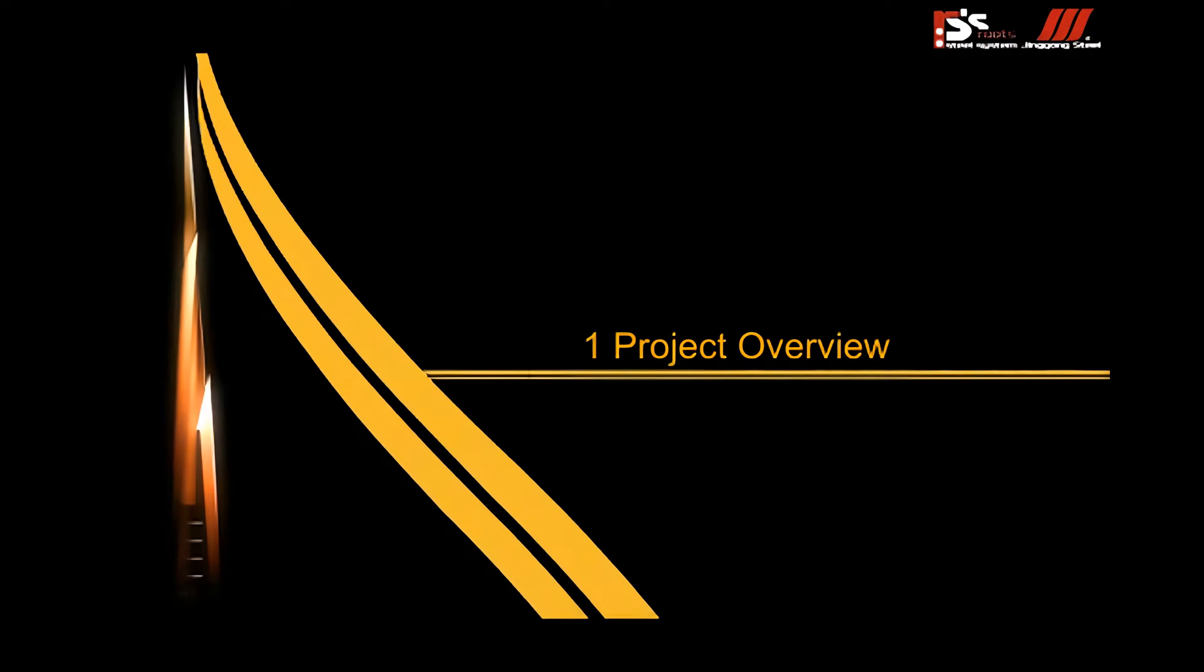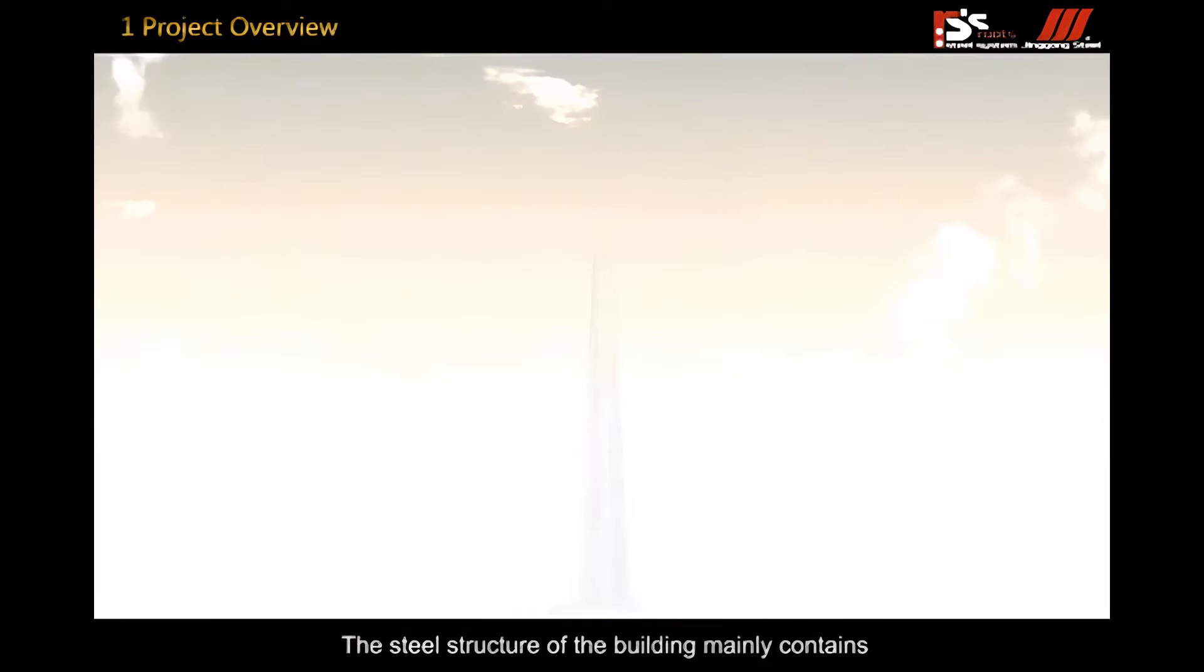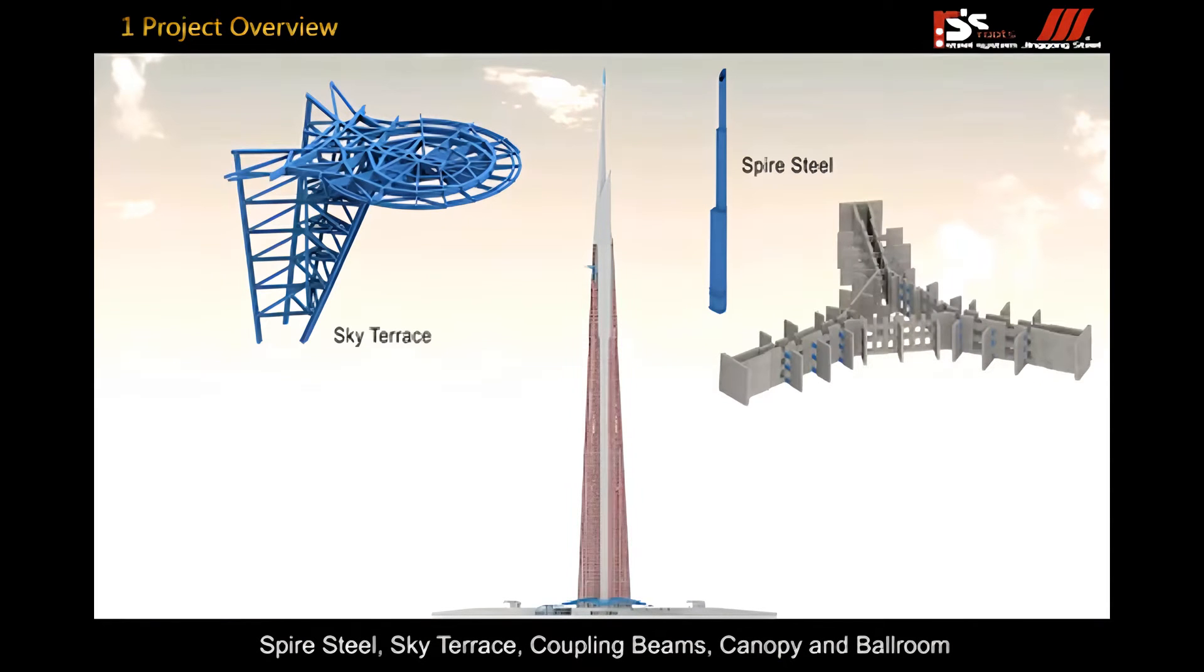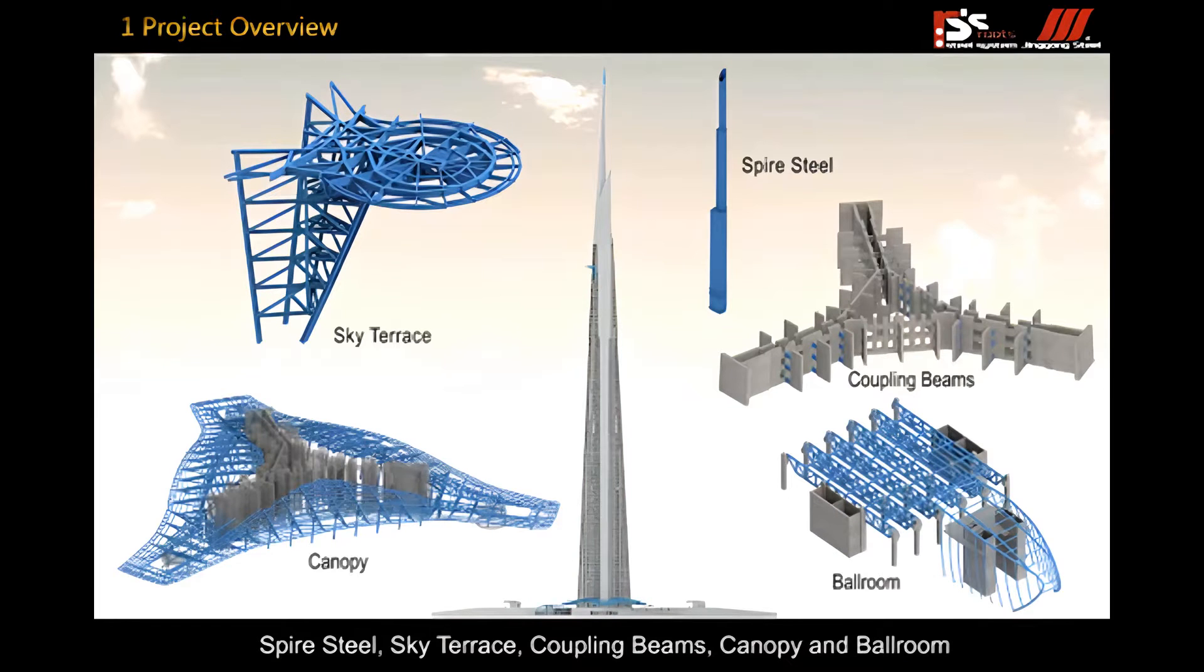First, Project Overview. The steel structure of the building mainly contains spire steel, sky terrace, coupling beams, canopy and ballroom. The total steel quantity is about 11,608 tons.